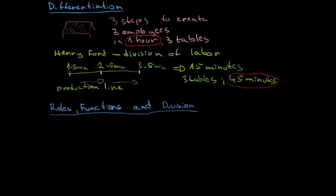We are able to create one more table unless something broke down. So this was the division of labor. We have divided our employees into different functions, so now we have some functions and they are doing some repetitive tasks so they are able to do them much more efficiently. And this was the differentiation. And now we are moving to a new part which are going to be roles, functions and division.